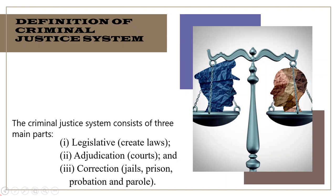The criminal justice system consists of three main parts. One is legislative, i.e. create laws. Second is adjudication, i.e. courts. Third is correction, i.e. jails, prison, probation and parole. In the criminal justice system, these agencies operate together under the rule of law.